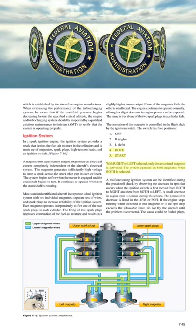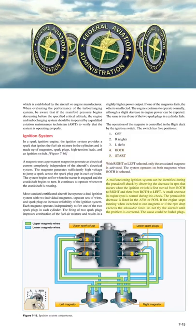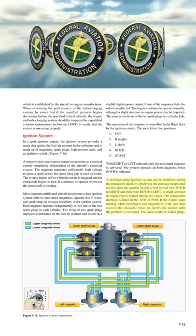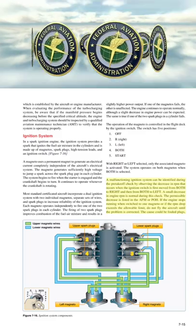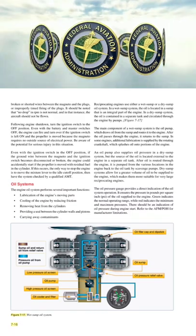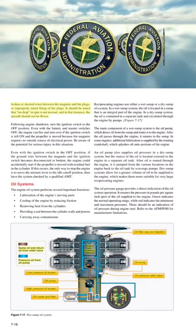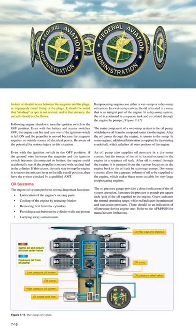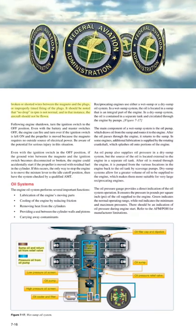With right or left selected, only the associated magneto is activated. The system operates on both magnetos when both is selected. A malfunctioning ignition system can be identified during the pre-takeoff check by observing the decrease in RPM when the ignition switch is first moved from both to right, and then from both to left. A small decrease in engine RPM is normal during this check. If the engine stops running when switched to one magneto, or if the RPM drop exceeds the allowable limit, do not fly the aircraft until the problem is corrected. The cause could be fouled plugs, broken or shorted wires between the magneto and the plugs, or improperly timed firing of the plugs.